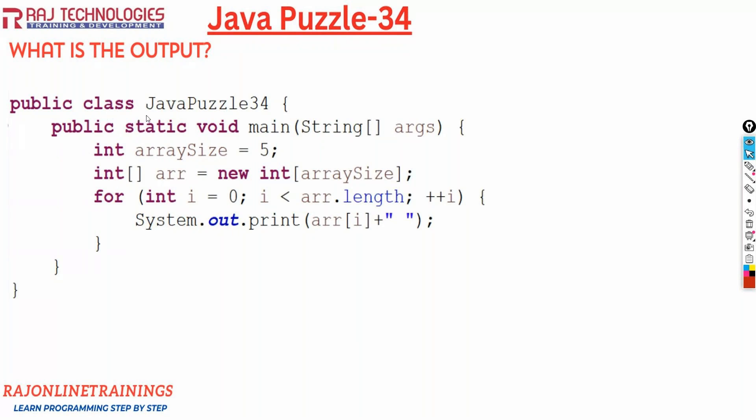Taking a new class Java Puzzle 34 with main method inside, we have taken array size as 5, integer array size 5. We are allocating memory for array: int array ARR equals new int of array size. So what is the array size here? 5. Now we are traversing the array: for int i equals 0, i less than ARR.length, plus plus i, and we are printing the elements of array using index.